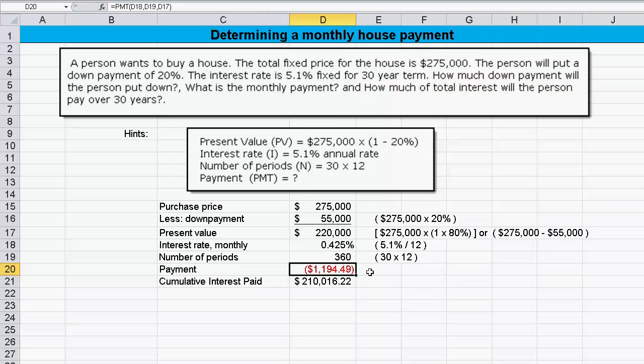There's 119449. That says for us to have a loan that's worth $220,000, and given these factors for the interest rates and number of periods, the payment would be 119449.